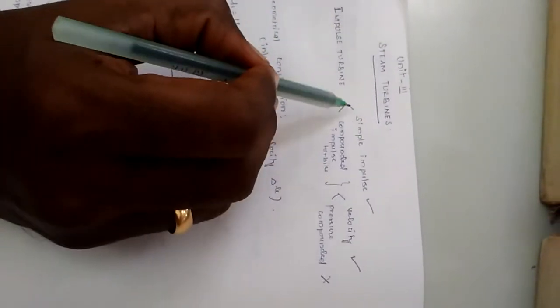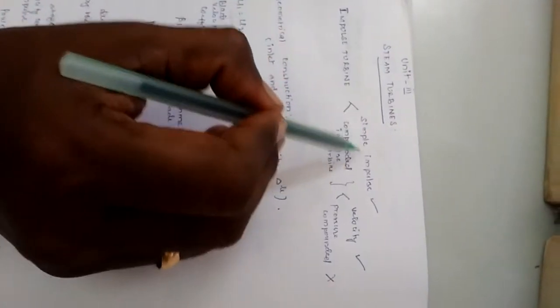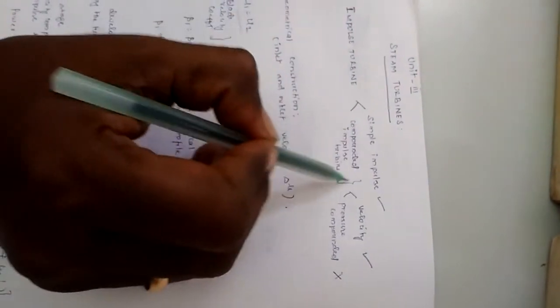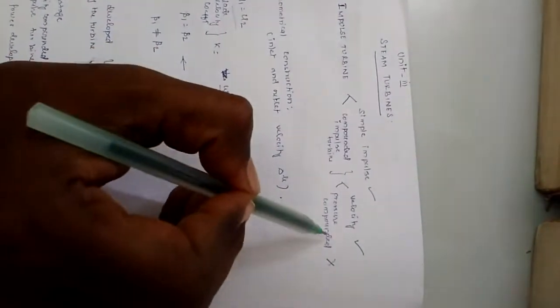This impulse turbine is again into two different types: simple impulse turbine and compound impulse turbine. Within compound impulse turbine we have velocity compounded and pressure compounded.